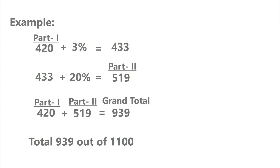For example, if a candidate has scored 420 marks in Part 1, then the aggregate Part 2 score will be calculated by adding 3% marks to Part 1 scores, which is equal to 433. Since there are two additional compulsory subjects — Islamiyat and Pakistan Studies — an additional 20% marks are awarded to 433 marks to equate to the total Part 2 marks of 600. Hence, the grand total marks obtained will be 420 in Part 1 plus 519 in Part 2, which is equal to 939 out of the total 1,100 marks.